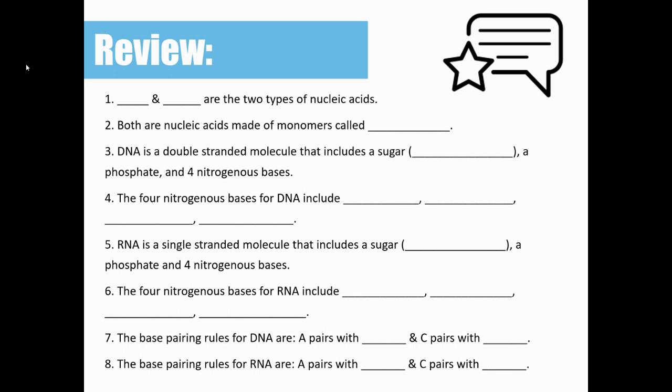Now we have base pairing rules that we learned in the last lesson. So number seven, the base pairing rules for DNA are A pairs with T, so adenine and thymine pair together, and then C pairs with G, so cytosine and guanine pair together. And then for RNA, remember we're not going to have thymine, so A won't pair with T in RNA. A will pair with U. So adenine and uracil will pair, and then cytosine will pair with guanine.